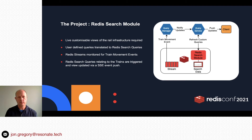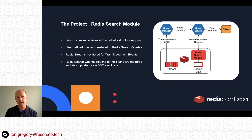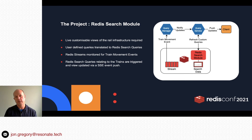We used the Redis Search module to provide customisable live views of the rail infrastructure, specifically trains. Users define their queries in the UI, which get translated into Redis Search queries. We subscribe to streams that identify train movement events; when an event comes in, it triggers services that check the query manager for any matching queries, and if so, Redis Search is triggered and updates are pushed to the client. This saved a lot of complex code by building on existing live process code.